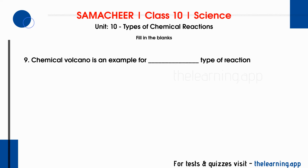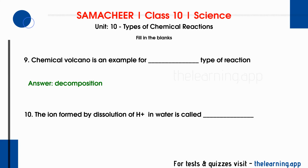Ninth question: Chemical volcano is an example of dash type of reaction. Correct answer is decomposition reaction. Tenth question: The ion formed by the dissolution of H+ in water is called dash. Correct answer is hydronium ion.